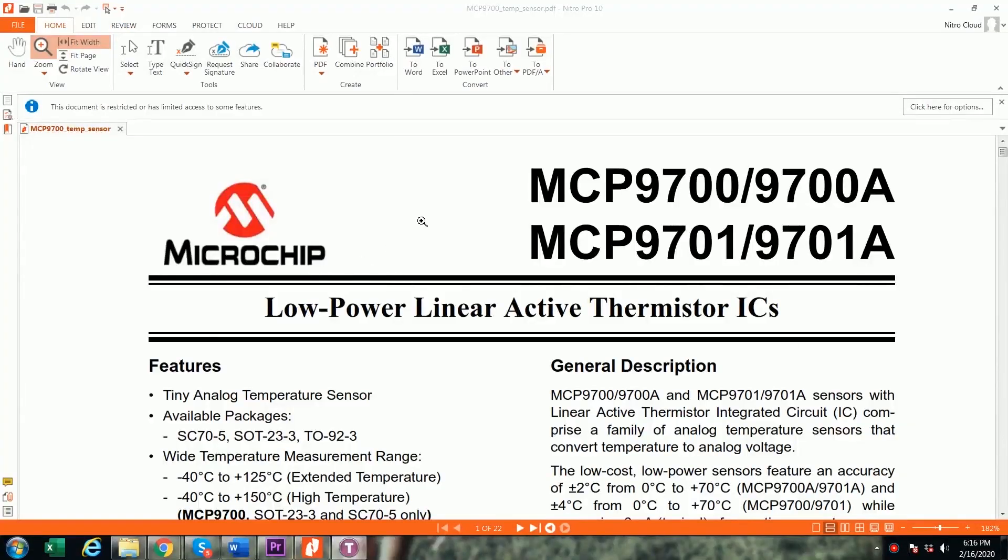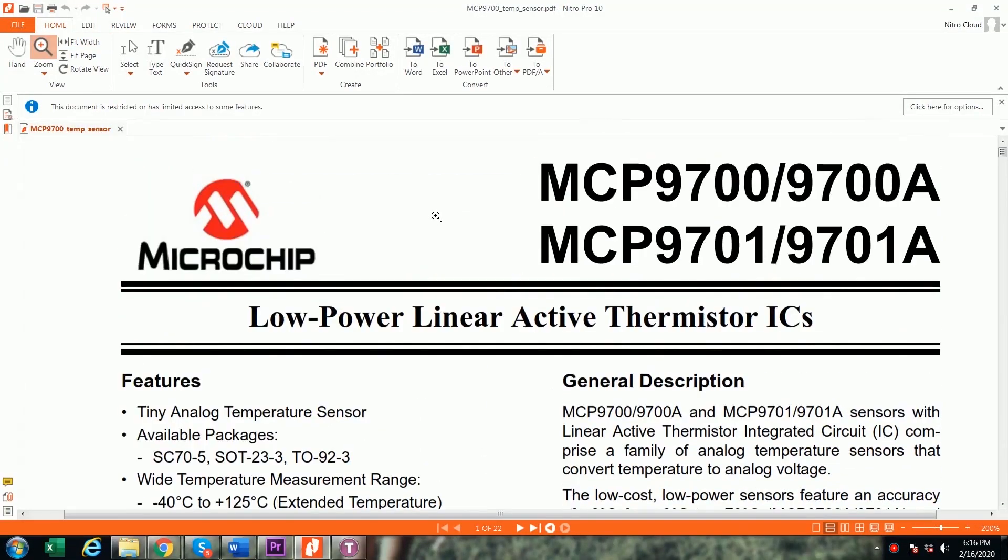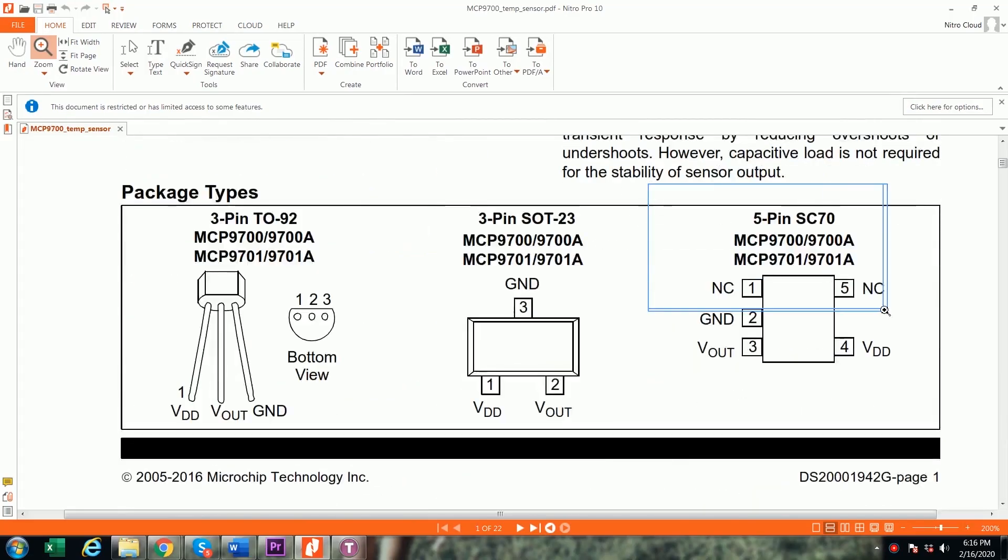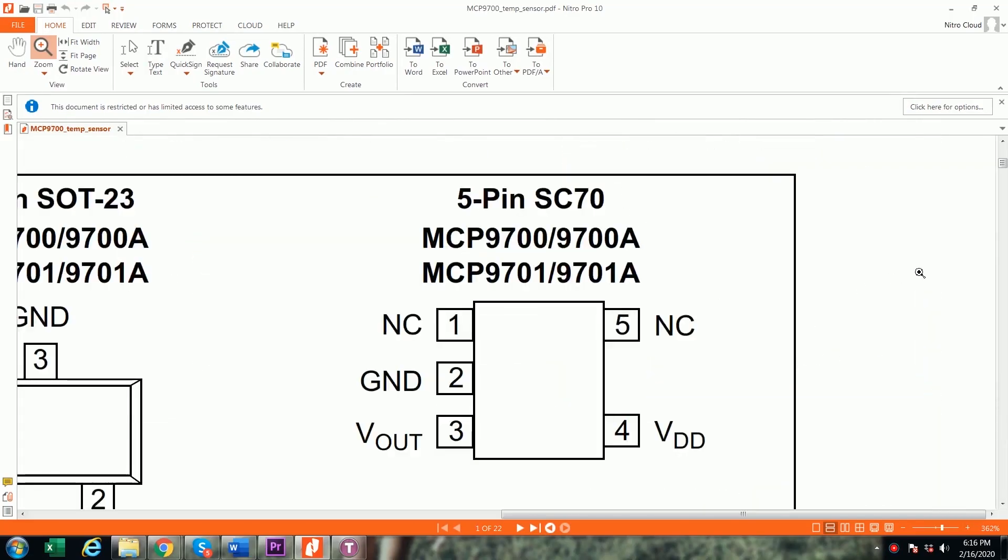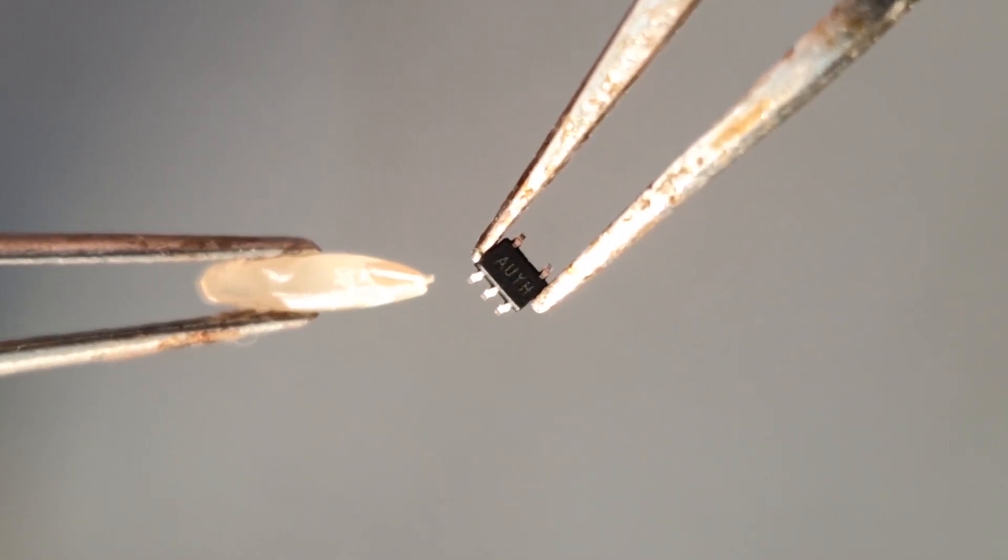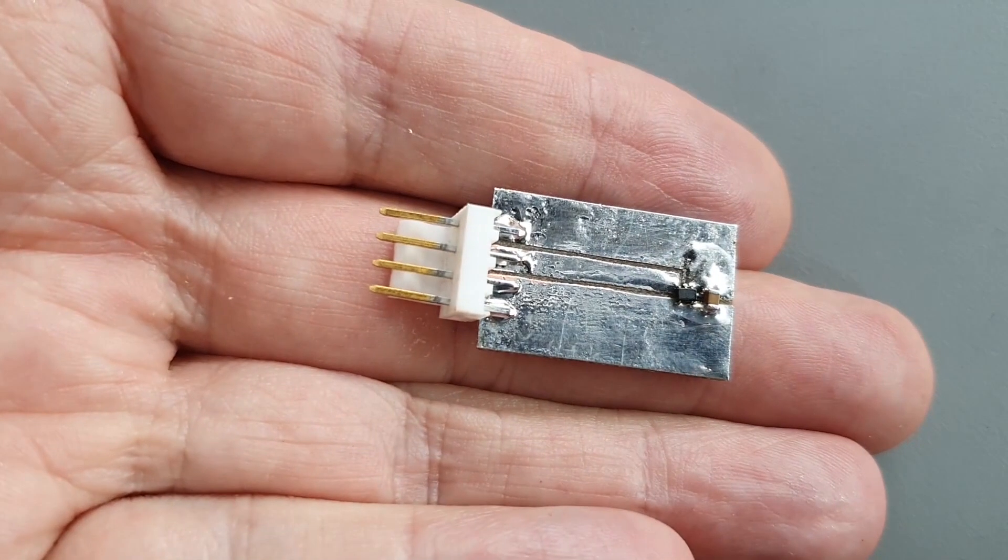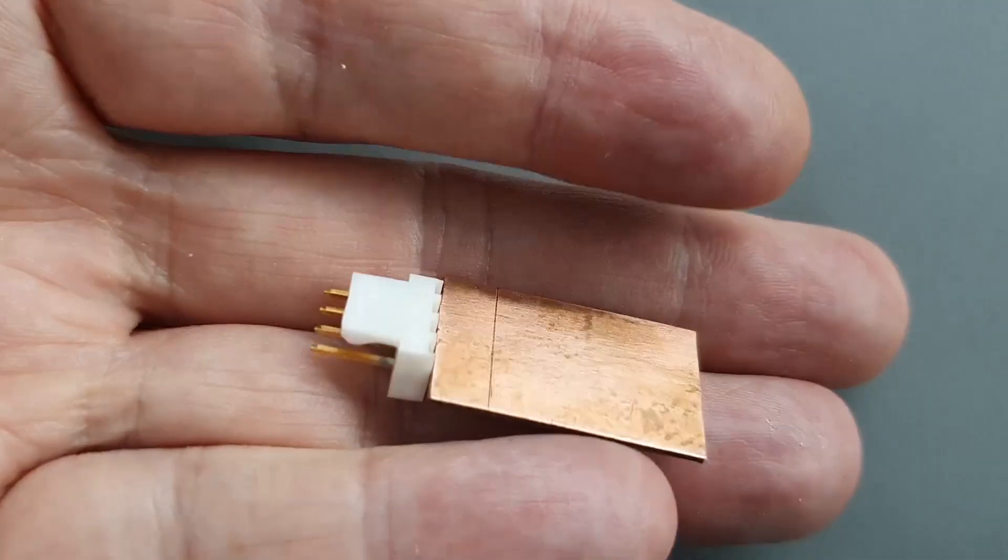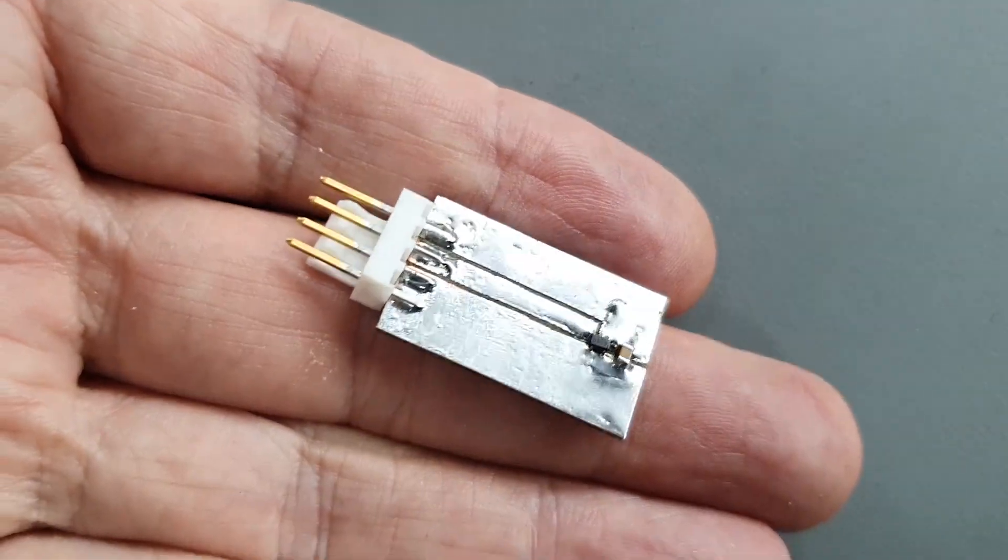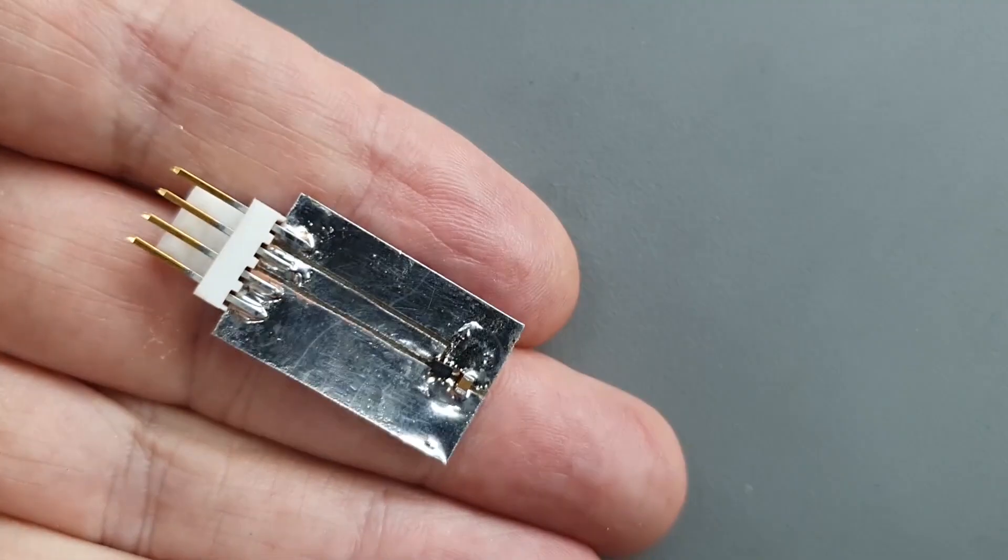Here's where this technique really shines. I had to work with these Microchip MCP 9700 temperature sensors, which come in this ridiculously small 5-pin SC70 package. A grain of rice dwarfs this part. It was totally impossible to work with this unless I made some kind of adapter board. In about 10 minutes, I was able to create this adapter board that made working with it convenient and easy. Problem solved.